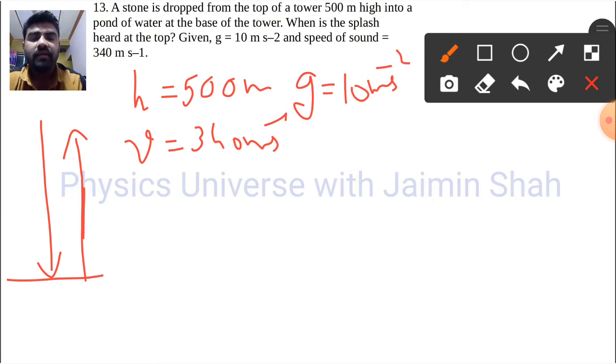First we need to find the time to drop that particular stone. To find the timing, since we dropped it, the initial speed v is 0.